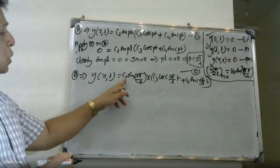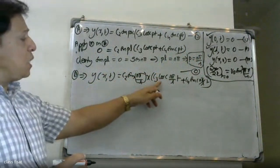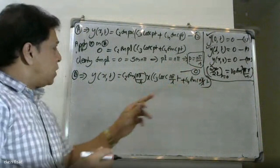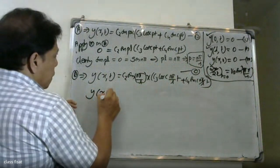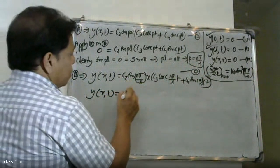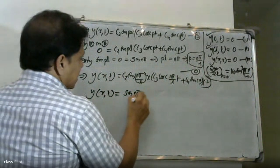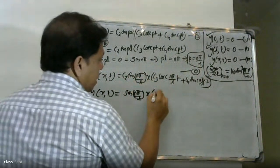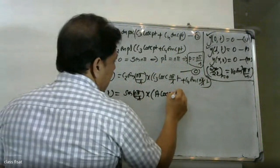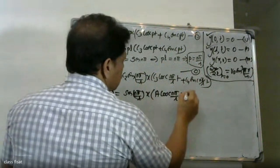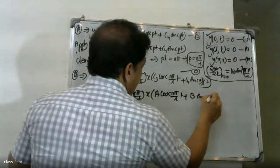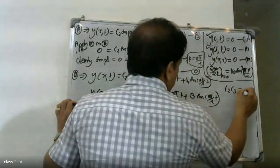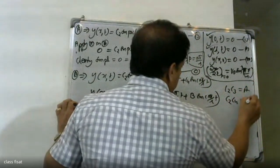The equation becomes y(x,t) = sin(nπx/L)·(c3·cos(cnπt/L) + c4·sin(cnπt/L)), renaming constants. Combining c2 with c3 and c4, we write y(x,t) = sin(nπx/L)·(aₙ·cos(cnπt/L) + bₙ·sin(cnπt/L)).